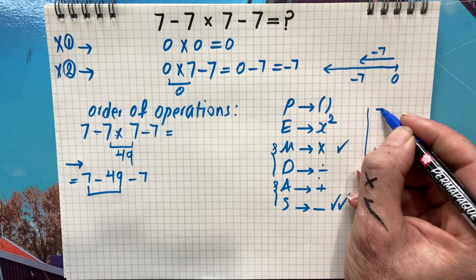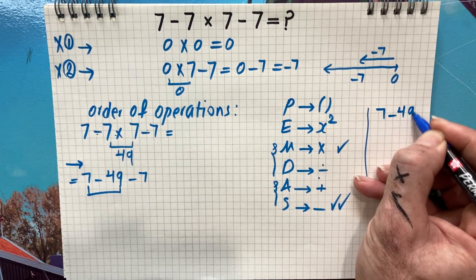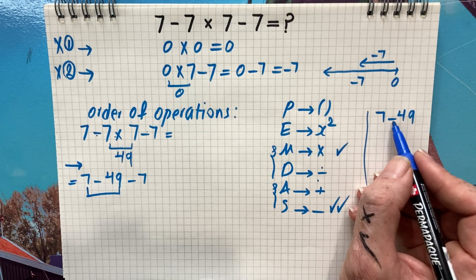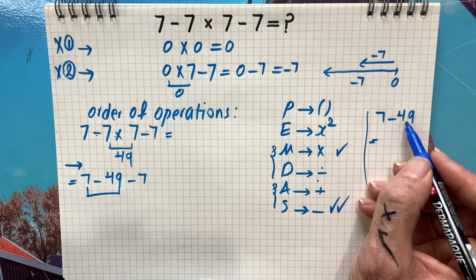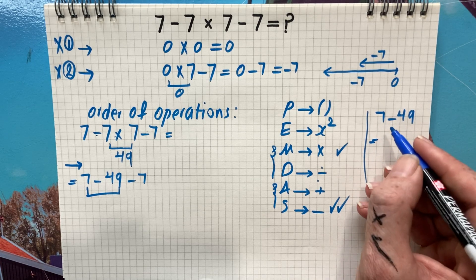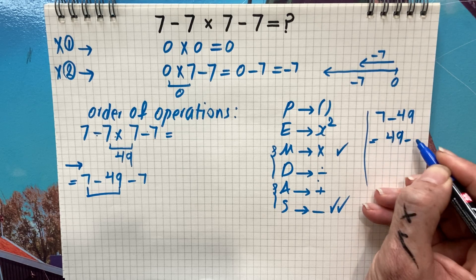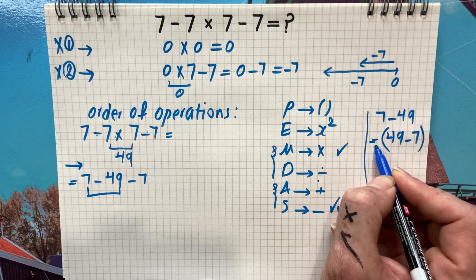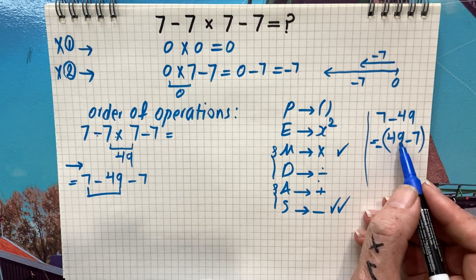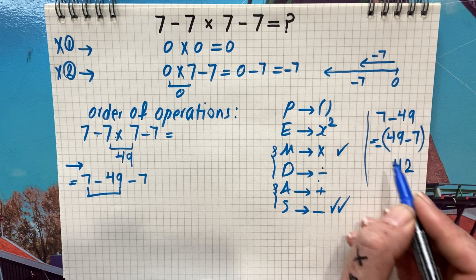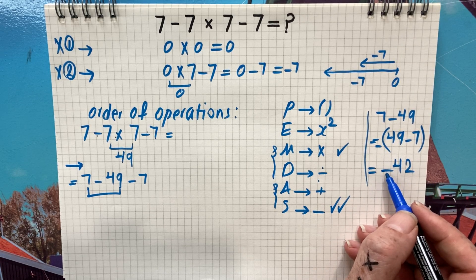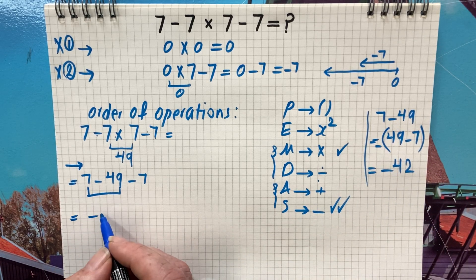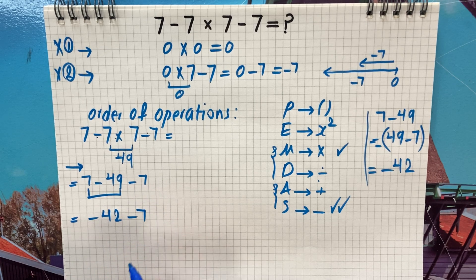Let me calculate seven minus 49. Since seven is less than 49, we rewrite it as 49 minus seven, but multiply the expression by a negative number. 49 minus 7 is 42, so seven minus 49 is negative 42. This gives us negative 42 minus seven.